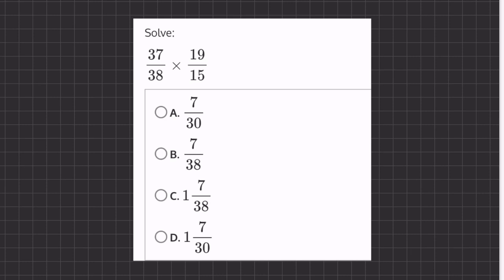Alright, so in this problem we are multiplying two fractions together. Now, before we start multiplying, we can use the commutative property of multiplication to simplify this problem to make it easier for us to solve.